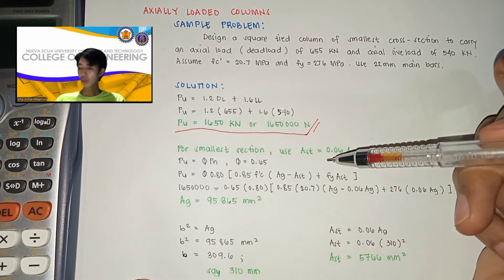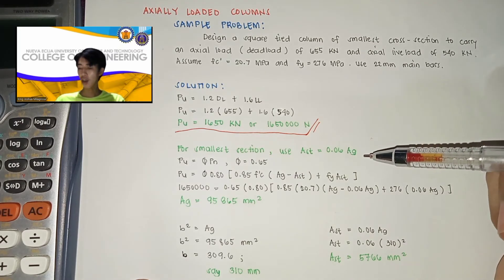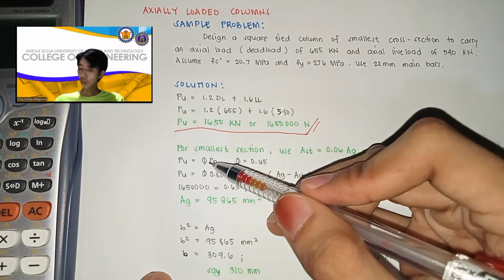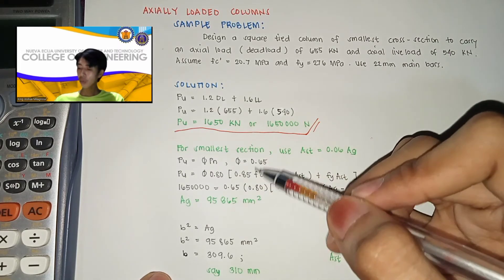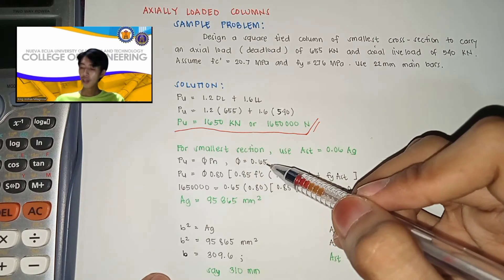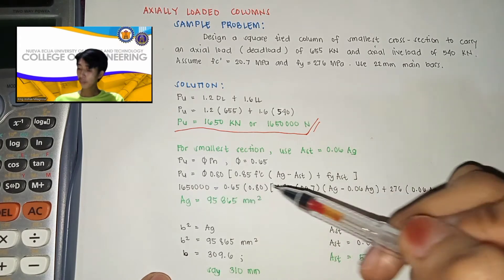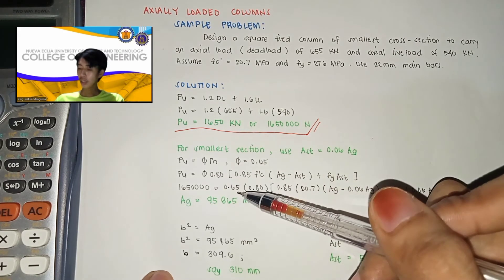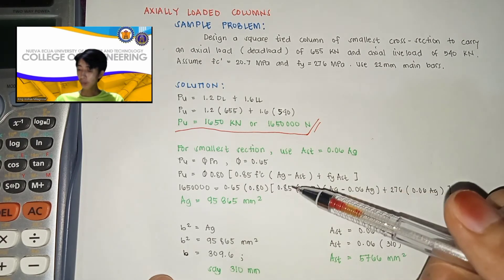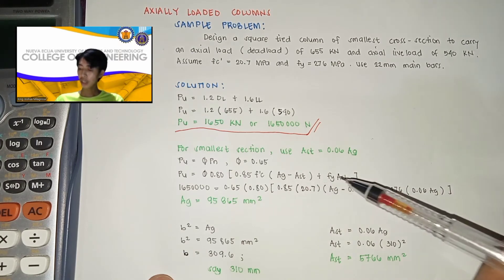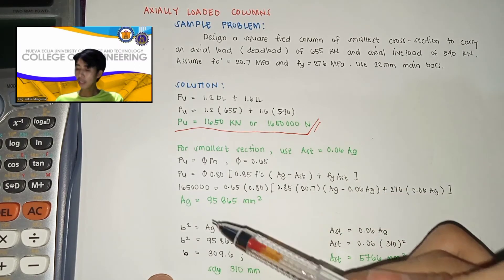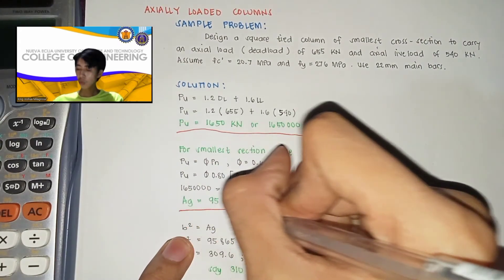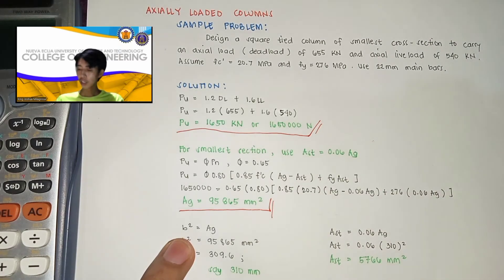For our smallest section, gagamit tayo ng air ng steel which is 0.06 ng gross area. So PU now is equal to safety factor multiplied by PN wherein yung factor of safety natin is equal to 0.65. So now here we have this equation which is PU is equal to safety factor multiplied by 0.80 times 0.85 FC' multiplied by gross area minus air ng steel plus FY air ng steel. So by substituting all the values, makukuha natin yung gross area is equal to 95,865 mm squared.